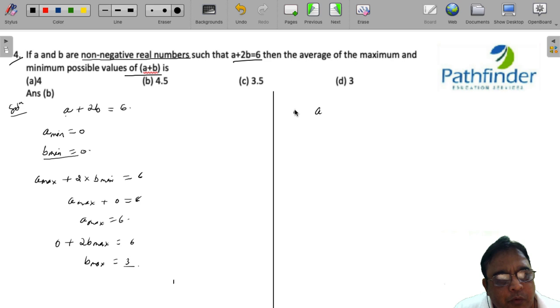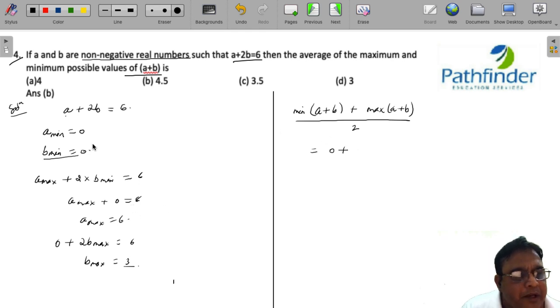Now what we need is the average of minimum of A plus B plus maximum of A plus B divided by 2, which means 0, that is minimum of A and B both is 0.